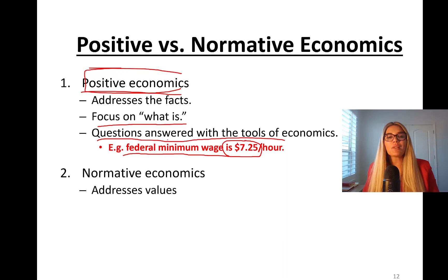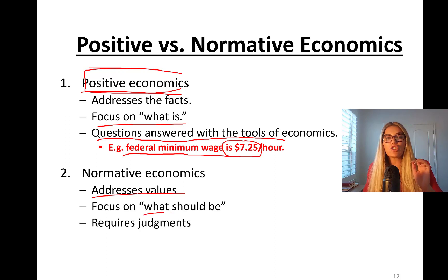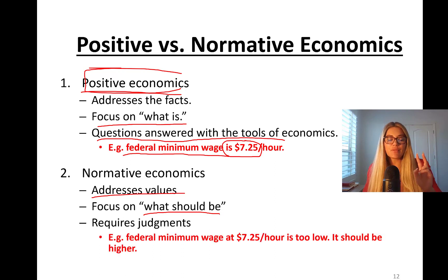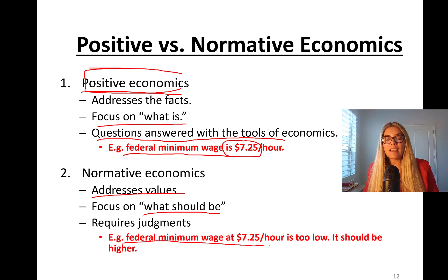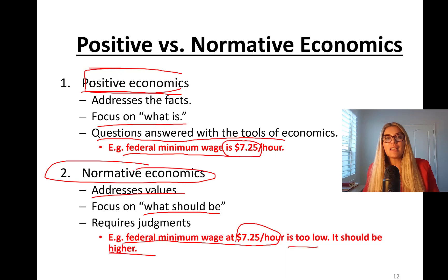Normative economics addresses values — it adds value judgments and focuses on what should be, requiring judgments. An example of a normative statement is: the federal minimum wage at $7.25 per hour is too low, it should be higher. That is a normative economic statement — what ought to be. Positive economics states the facts; just keep that in mind.